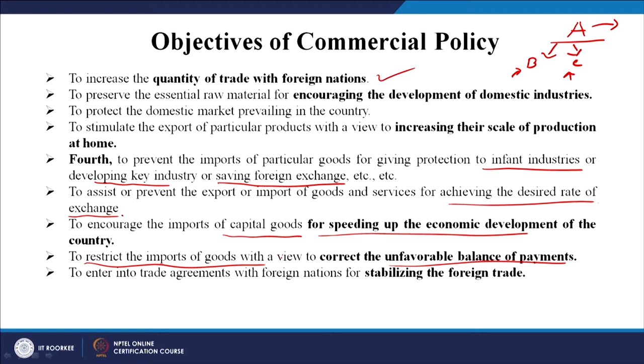The last objective is to enter into trade agreements with other nations for stabilizing foreign trade. The Indian government has been into several trade agreements with neighboring countries and other countries too, which would improve foreign trade and create a state of equilibrium and growth.